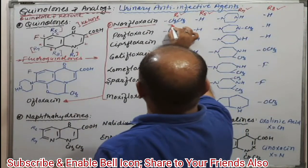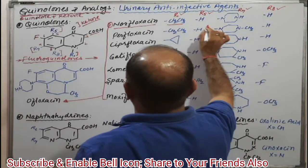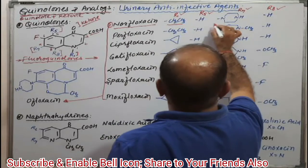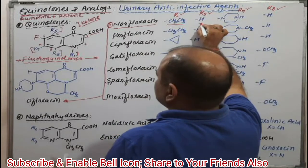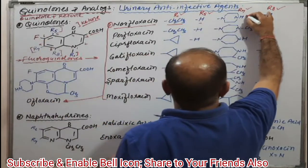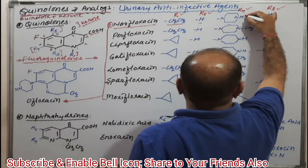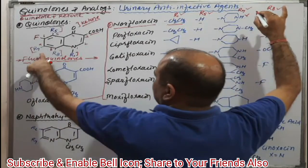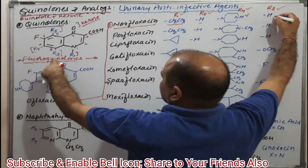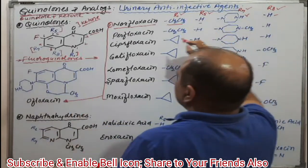Norfloxacin: R1 is C2H5 (ethyl), R5 is H, R7 is the piperazine ring system, and R8 is hydrogen.